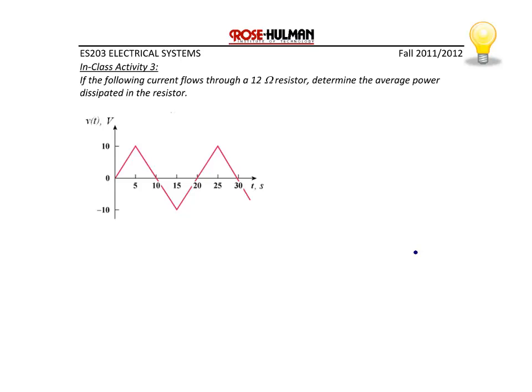Here's our final example for today's lecture. If the following current flows to a 12 ohm resistor, determine the average power dissipated in the resistor. The first thing we need to do is to identify a formula to describe this piecewise linear function. So we see that it has a period of 20, so T equals 20. And that there are several ways to describe this, including v of t equals 2t for this first equation, and that would be for t between 0 and 5 seconds.